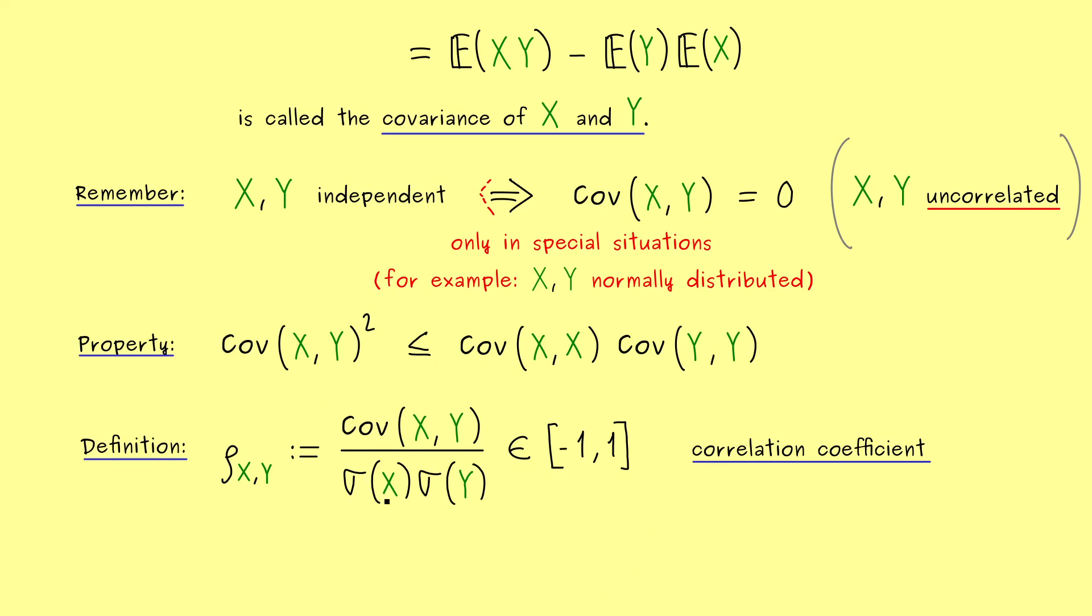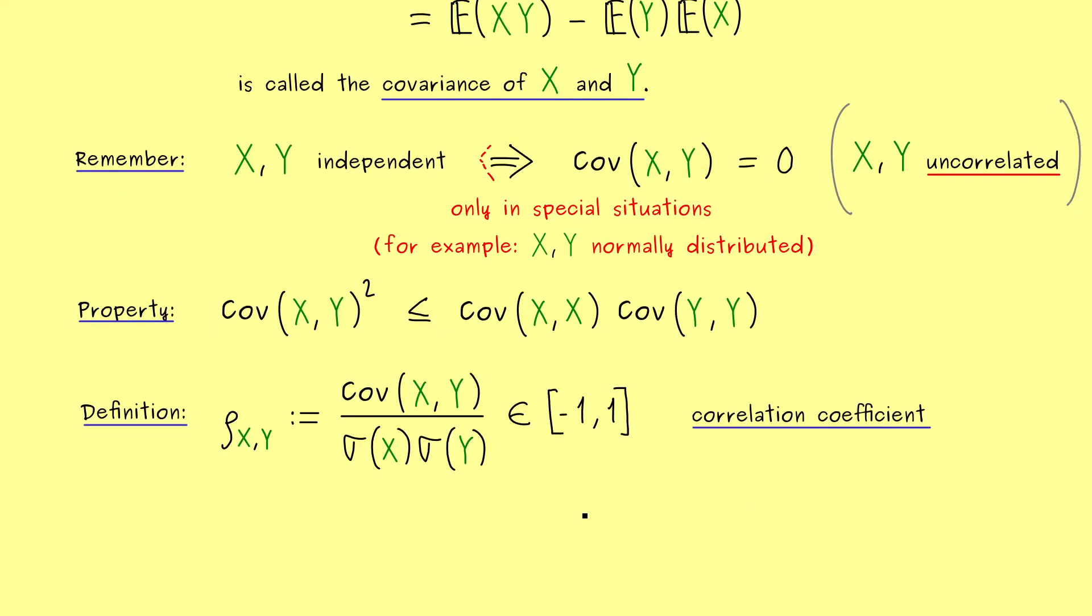Here, being close to 0 means the two random variables are close to independence. On the other hand, being close to minus or plus 1 means they are very far off of being independent, so they are very correlated. However, this is just a quick overview. Later we will go more into the details about the correlation coefficient.